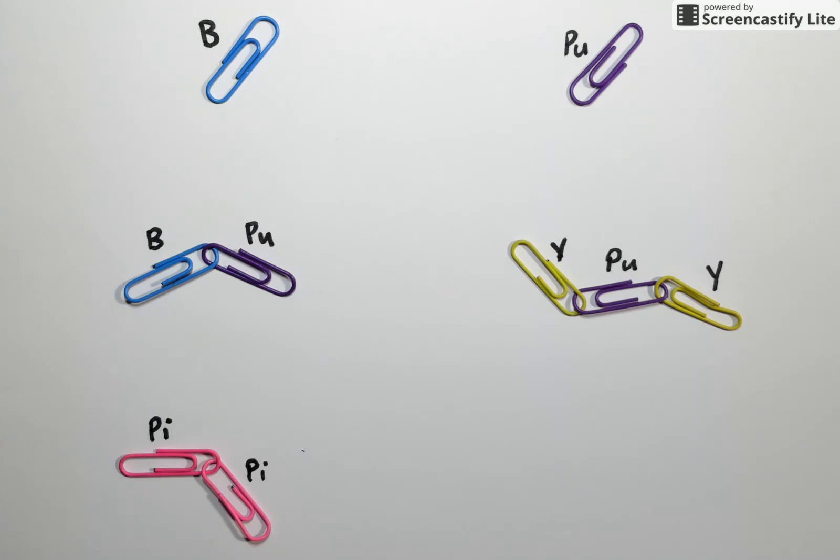On your screen you should see a number of different colored paper clips, each labeled with a chemical symbol. These paper clips are here to model the elements of the periodic table.